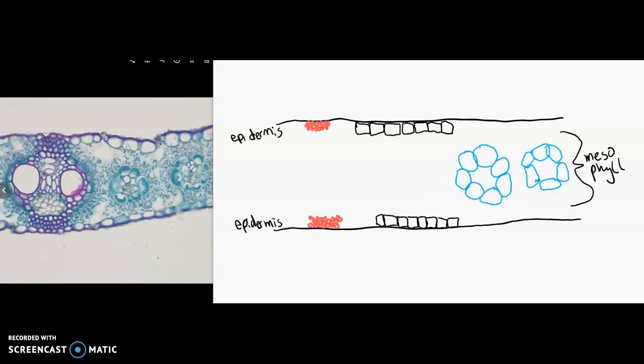All right, and here we have a huge midvein with those fibers, and we still have the bundle sheath cells towards the outside kind of helping to give that some definition.